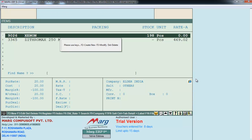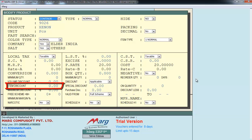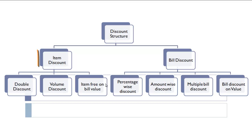You can also set the discount from the item master itself, and at the time of billing the software will automatically pick the defined discount from item master. Now let's understand discount on an advanced level — double discount. Many times you notice 50% plus 40% discount; these are called double discounts. Let's see how to apply double discount in Mark software.